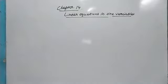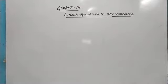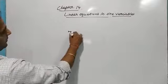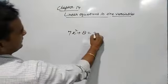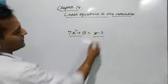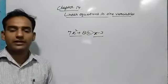What is an equation? A statement which states that two algebraic expressions are equal is called an equation. For example, 7x² + 8 = x − 3. As you can see, two algebraic expressions are there and with this equal-to sign they are equal.